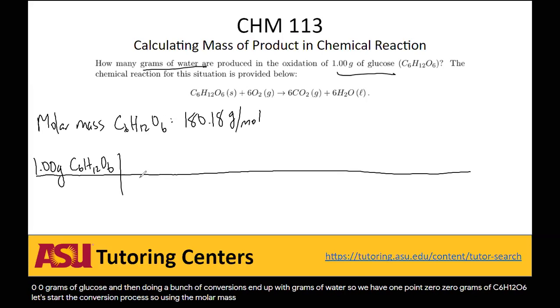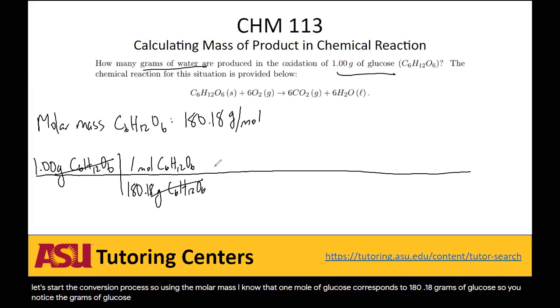Using the molar mass, I know that 1 mole of glucose corresponds to 180.18 grams of glucose. So you notice the grams of glucose cancel out, and now I'm in moles of glucose.